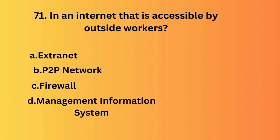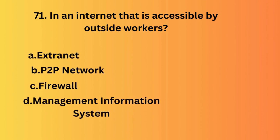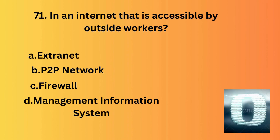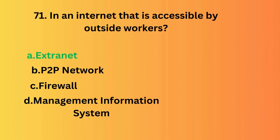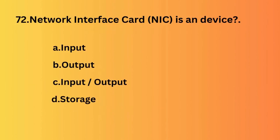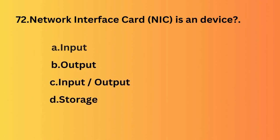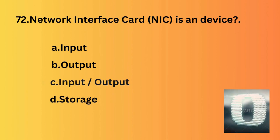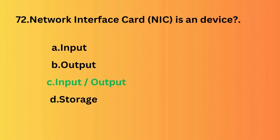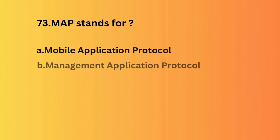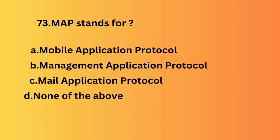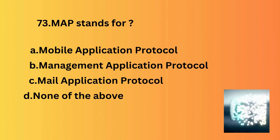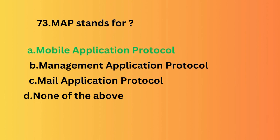An intranet that is accessible by outside workers — the answer is extranet. Network interface card is an input and output device. MAP stands for — the answer is mobile application protocol.